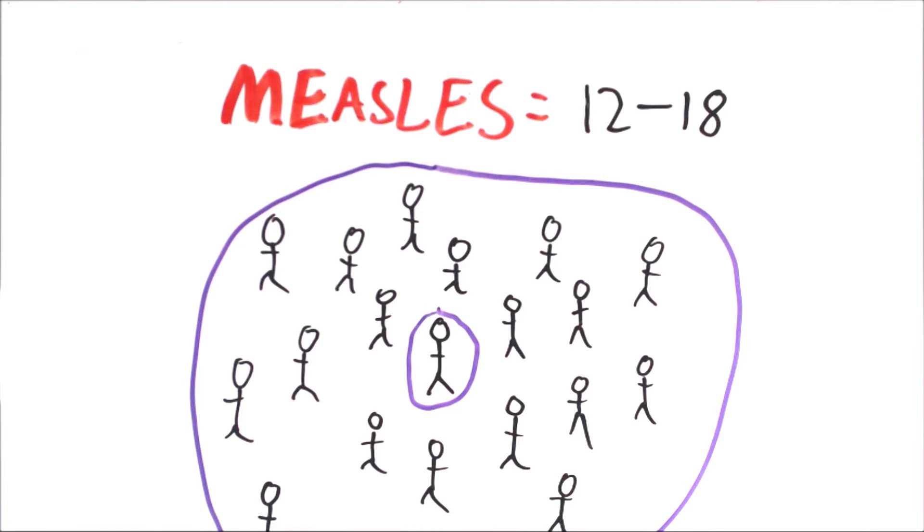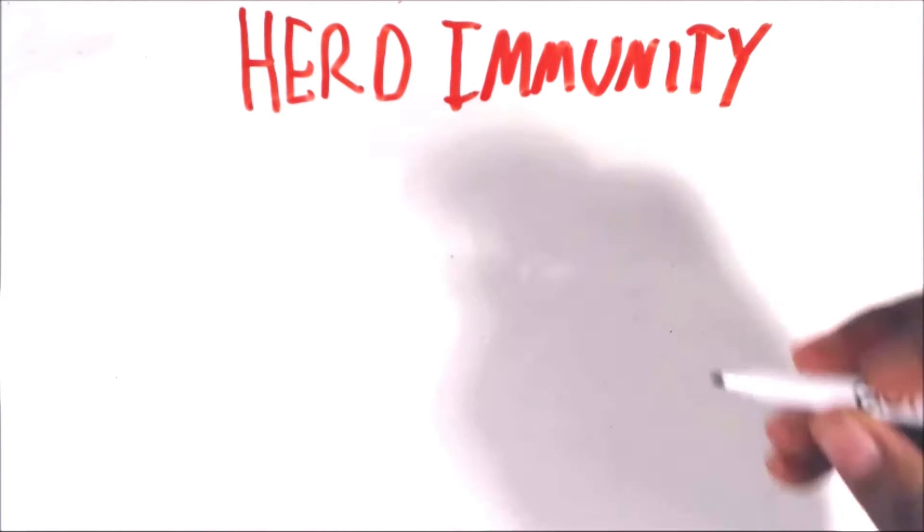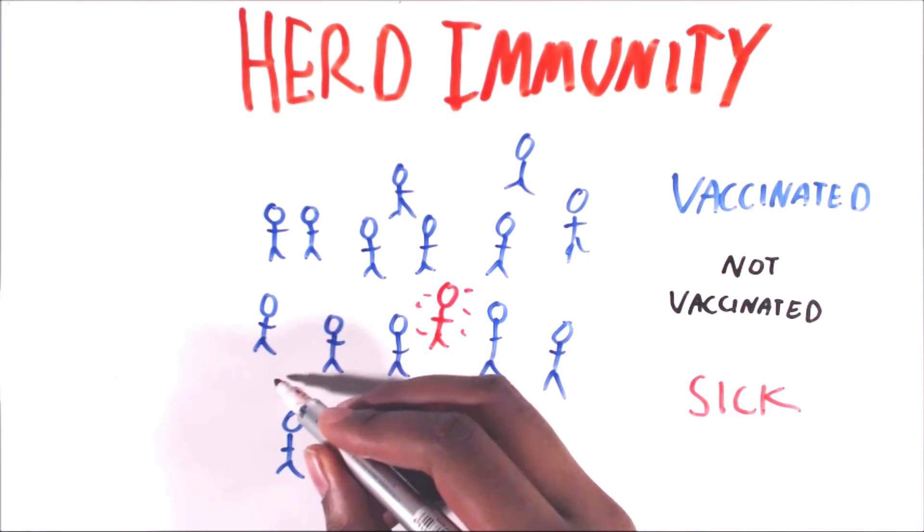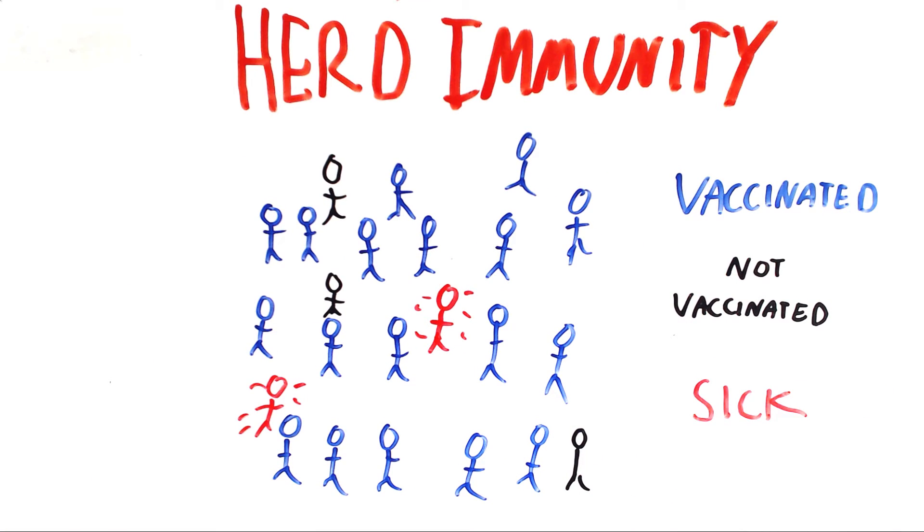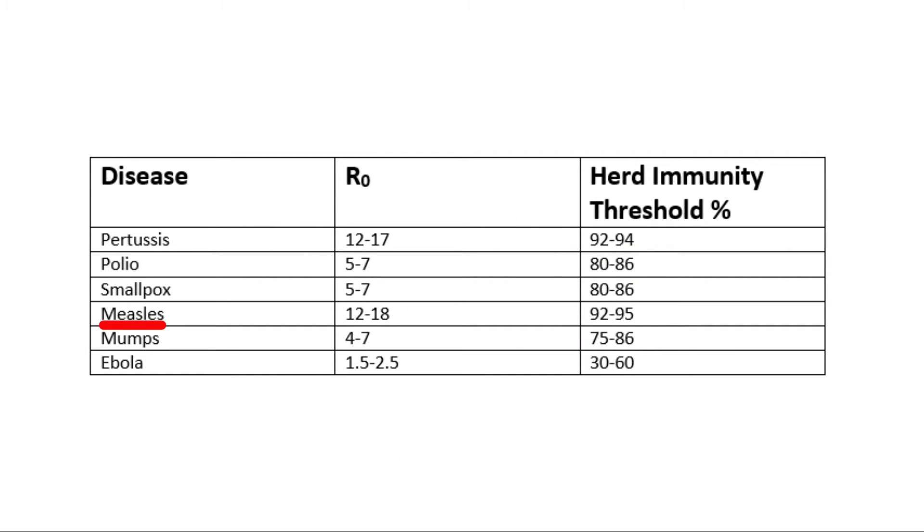But vaccines can greatly affect this. Herd immunity is the indirect protection of individuals from contagious diseases by a highly immune population. The protected people in the group can protect the unprotected. For a disease as contagious as measles, the vaccination rate needs to be above 95% to stop an outbreak.